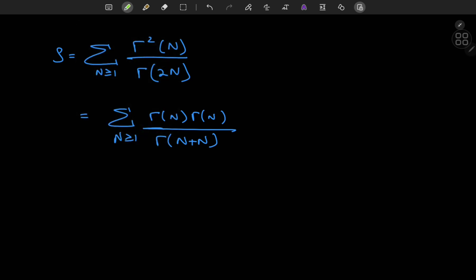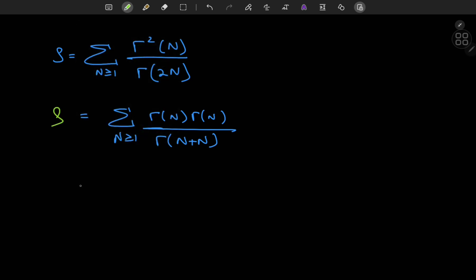Ring a bell yet? Recall the beta function with complex arguments u and v related to gamma u times gamma v divided by gamma u plus v.